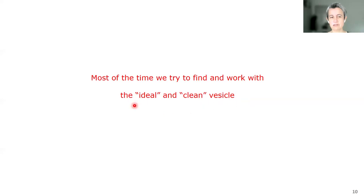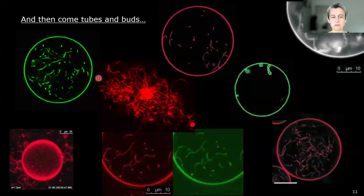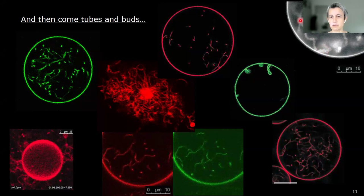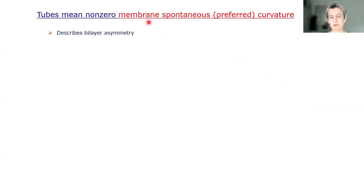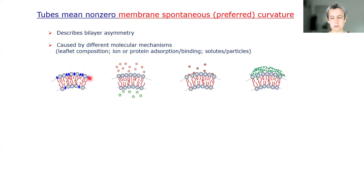Many labs use giant vesicles and people typically look for the ideal clean vesicle, but very often one observes tubes and buds. The tubes can be inward or outward, very thin or pearl-chain-like, and they mean something: the membrane prefers to adopt a certain curvature, which is called spontaneous curvature. It describes the bilayer asymmetry, which can result from different composition of the two leaflets, different composition of solutions across the membrane, or asymmetric ion or protein adsorption.